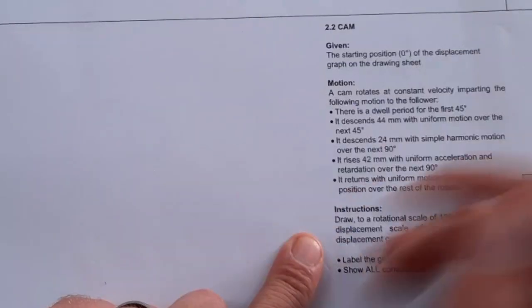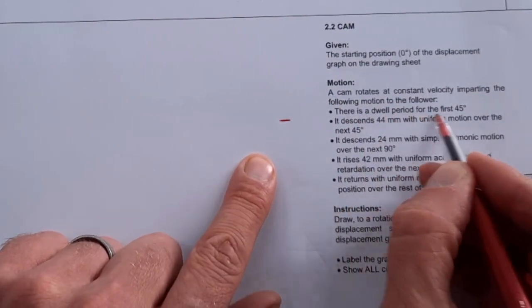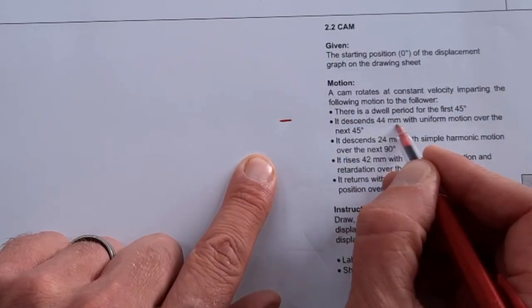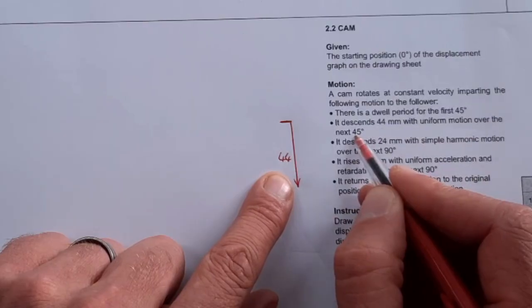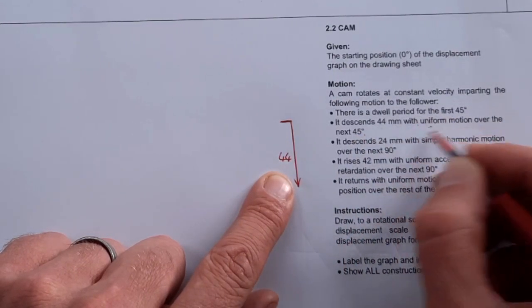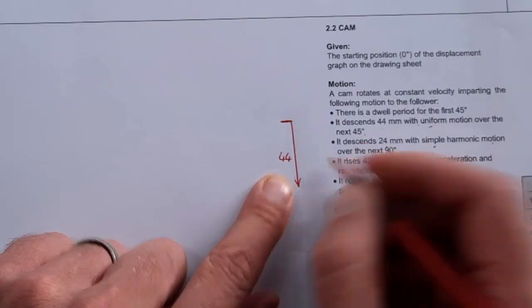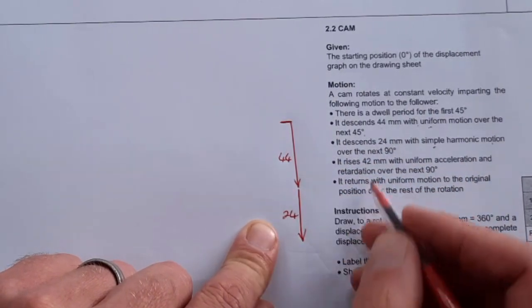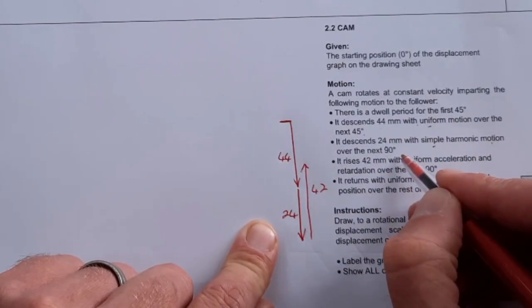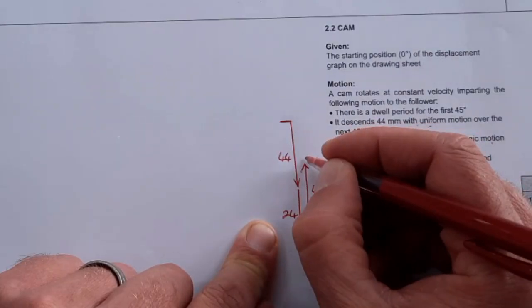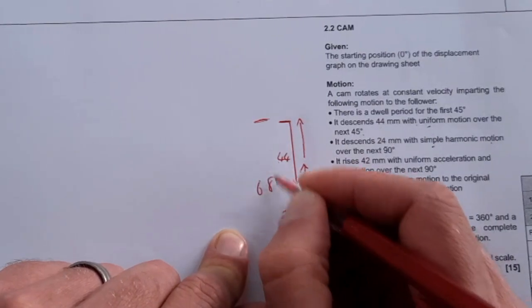They do not give the displacement height because you have to be able to determine how to do it. Here's the hack: you're going to start off, whenever you look at the motion and determining the height, just start with a line anywhere on your piece of paper. Then it says there's a dwell period for the first 45 degrees, so we're still at zero. Then it descends 44 millimeters. I let my learners draw a line, make an arrow and call this 44 with uniform motion over the next 45 degrees. Then it descends 24 millimeters with simple harmonic motion over the next period, so we add that, label that 24. Then after that it rises 42, so now it starts to rise again, that's 42. And then it returns to the starting position. That's the remainder. What we determine here is that the total height is 44 plus 24 which is 68. That is the total height of your displacement, in other words the vertical scale, 68.